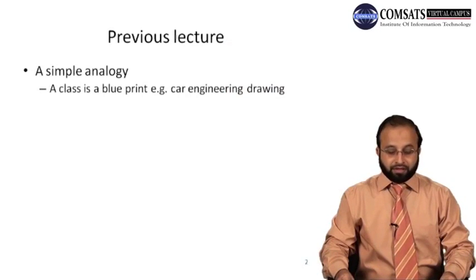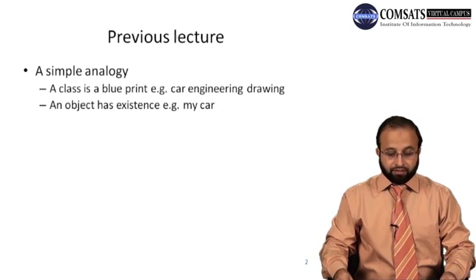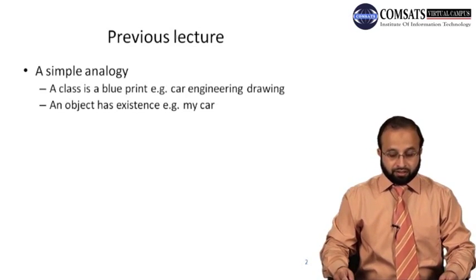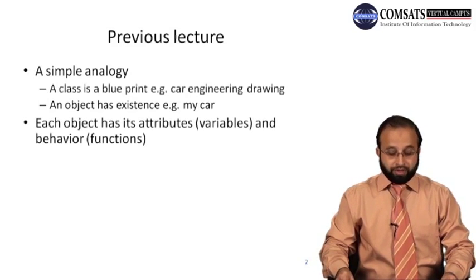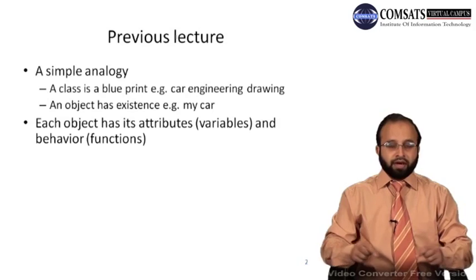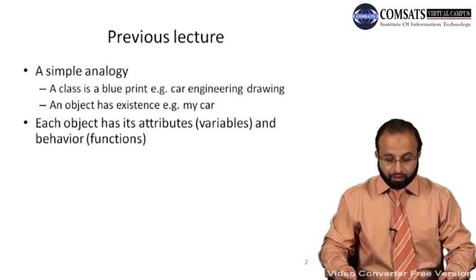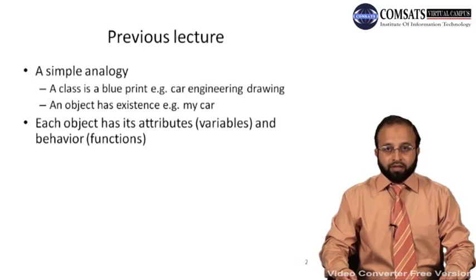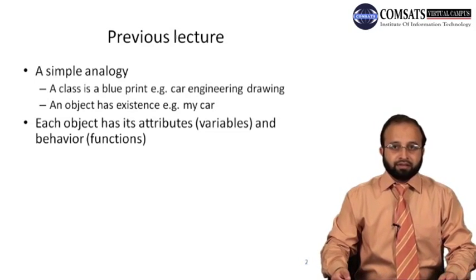Welcome to Lecture No. 2 of the course Object Oriented Programming. In the previous lecture, I showed you a simple analogy to understand the class and the object. We saw that a class is actually a blueprint — for example, a car engineering drawing — and an object is something that has some existence, for example my car or your car. Class describes what the behavior of any object of that class will be when created.